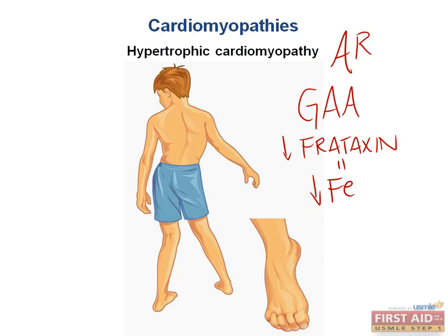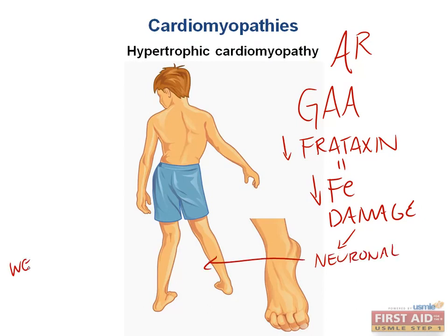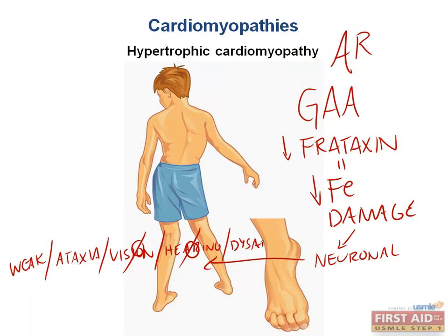Decreased levels of frataxin mean that we lose the ability to bind iron and clear it from cells. So iron accumulates and causes iron-mediated damage to many cells. The disease we are talking about is Friedreich's ataxia. Low frataxin levels mean patients cannot control iron's damaging effects, leading to neuronal damage everywhere — causing weakness, ataxia, vision problems, hearing problems, and dysarthria, in addition to skeletal manifestations such as pes cavus.